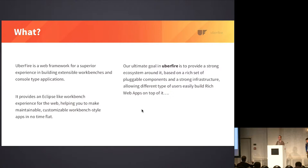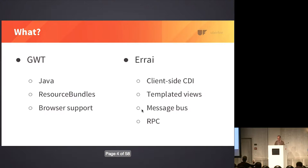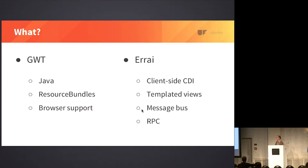We use GWT mainly for the cross-browser compilation, and we heavily rely upon Errai. There's a talk after this in room two about Errai, so if you're interested in some of the things I mention here, it's worth going to see that talk as well. Errai provides client-side CDI — full CDI in the browser where you can inject resources, observe events, and things like that. It also provides templated views where you can construct your views declaratively rather than programmatically, similar to UiBinder, and a message bus which is cross-server-client and cross-client.